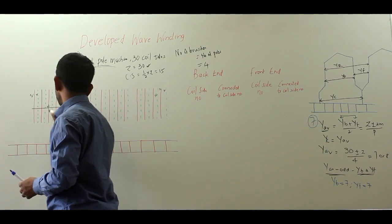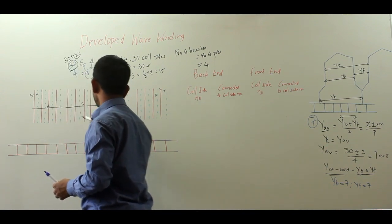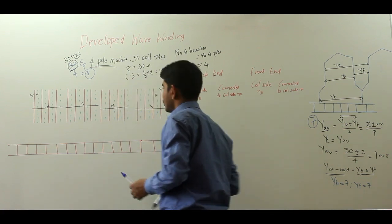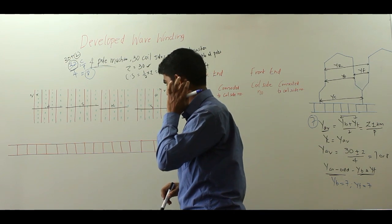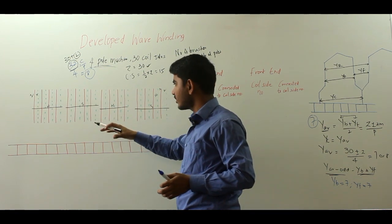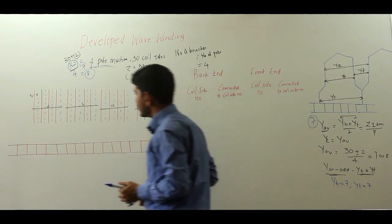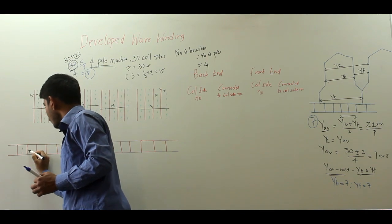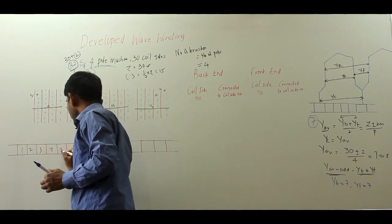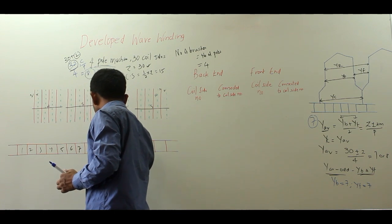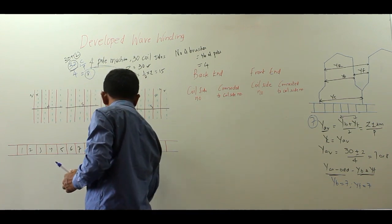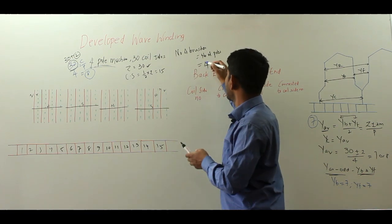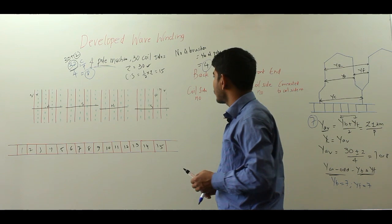There are alternate north and south poles — north, south, north, south — and the windings lie successively under the alternate poles. The number of commutator segments is 15. I shall number them 1 through 15. So 15 commutator segments are there and the number of brushes must be 4 for satisfactory performance of commutation.